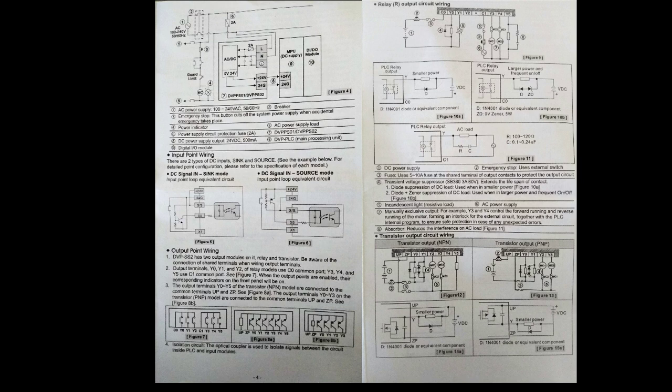We can use 24 volt DC or 220 volt AC for C0 and C1. If we don't give C0 a voltage, we can't see any voltage at the Y0 output.